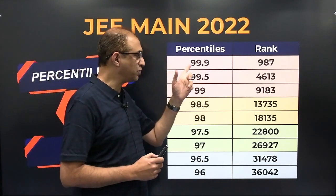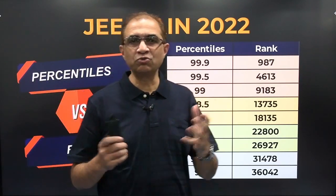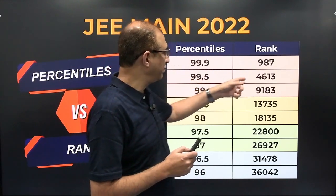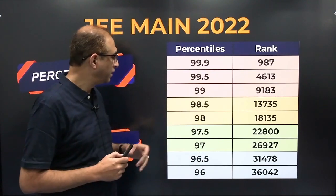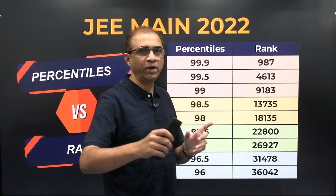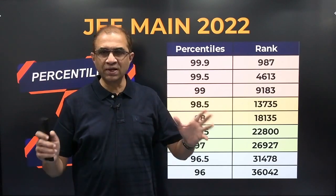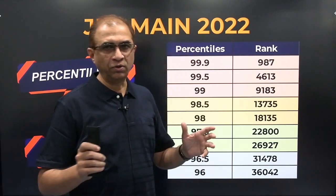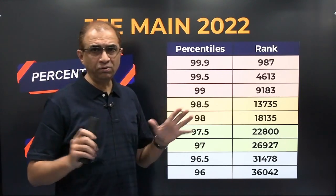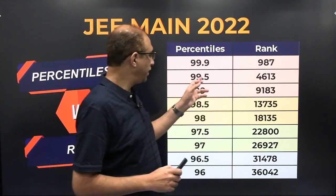99.5 percentile — that is where the disappointment was. There were some students getting 99.5 who thought computer science was assured in open category in the top NITs. They are in for a disappointment. 99.5 ends at rank 4613, so open category in the top 3 NITs for computer science will be difficult. 99.0 will be around rank 9183 — you will still get a decent branch in a decent NIT. Will you get IIIT Bangalore? No, not possible at 99.0; 99.5 is possible.